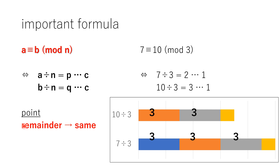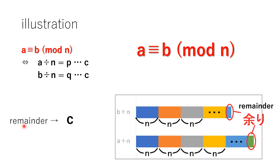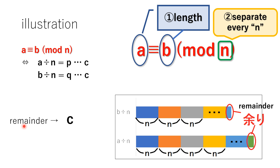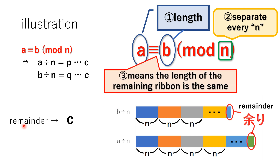If you are told to make 3cm ribbons as many as possible, the yellow parts are the remainders that will be thrown away. To summarize, you can understand this equation by three points: first, A and B represent the lengths of belts; second, mod N means separate every N; and third, the congruence mark means the length of the remaining ribbon is the same.